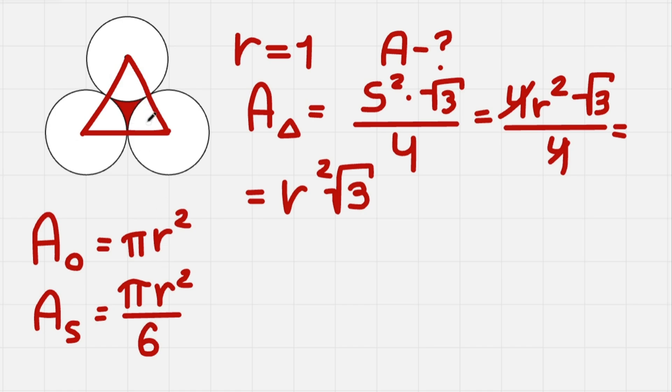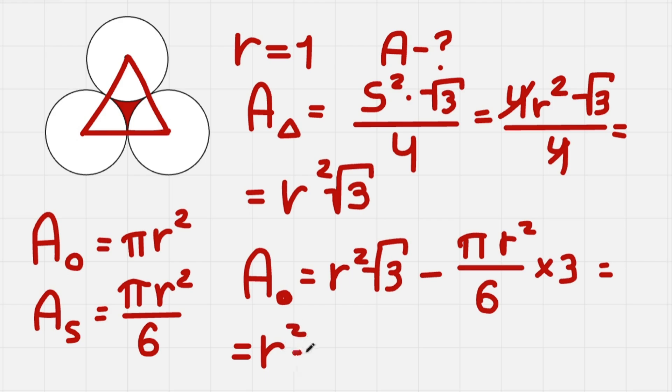So that is the area of the sector, and as you know, we have three areas. So to find this little red area, we need to subtract from the area of the triangle three areas of the sector. So area of this red area equals. Now we take the area of the triangle, so r squared times square root of 3, minus pi r squared divided by 6, and because we have three sectors, we also do times 3. So this equals r squared square root of 3, minus pi r squared divided by 2.